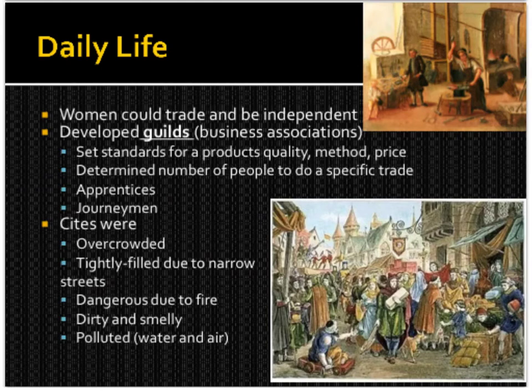Daily life in cities: women could trade and be independent. People started to develop guilds — business associations — which set standards for a product's quality, method, and price, and determined how many people could do a specific trade, regulating themselves. There was a process of gaining expertise: you would have to be an apprentice, then a journeyman. Cities were overcrowded and tightly filled due to narrow streets, dangerous because if something caught fire everything caught fire, dirty, smelly — people would throw waste out the windows — and very polluted, which contributed to the spread of disease.